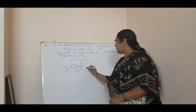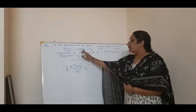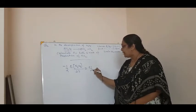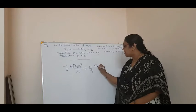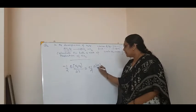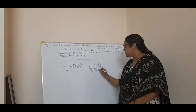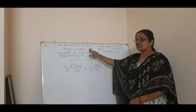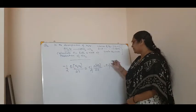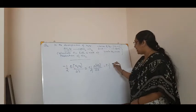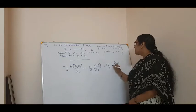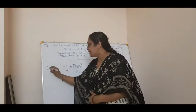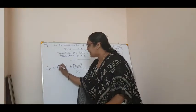That is equal to 4NO₂ plus O₂. That is, plus 1 by 4 into delta concentration of NO₂ divided by delta T. That is again equal to plus 1 by 1 — because the stoichiometric coefficient is 1 — into delta concentration of O₂ by delta T. This is how you write the average rate of reaction.